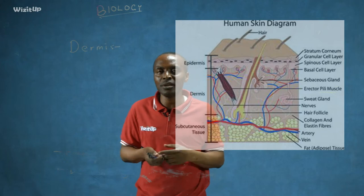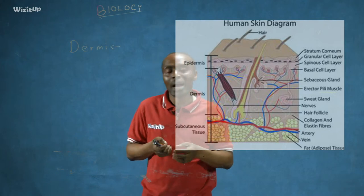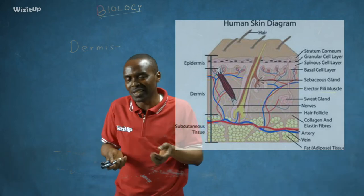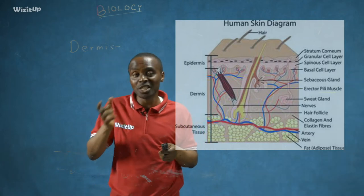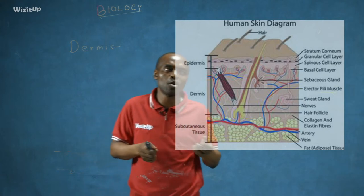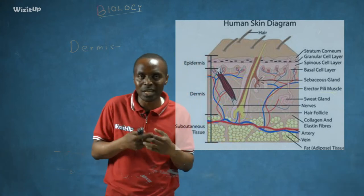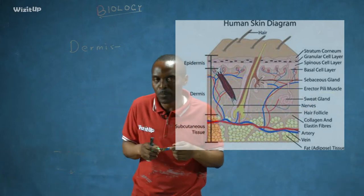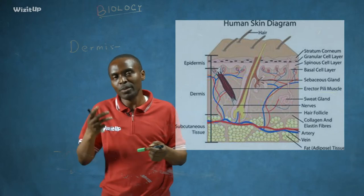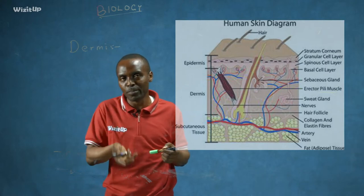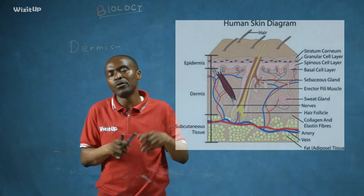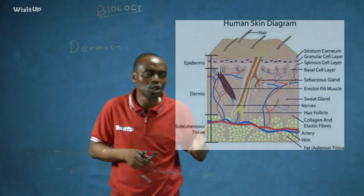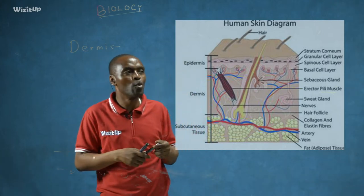Sweat contains urea and some salts — that is why if you accidentally taste your sweat you will notice it is salty — as well as uric acid and water. The sweat gland plays an important role in excretion, because through sweating it removes urea from our body. It also helps regulate body temperature, and through removal of water and salt it carries out osmoregulation and homeostasis.